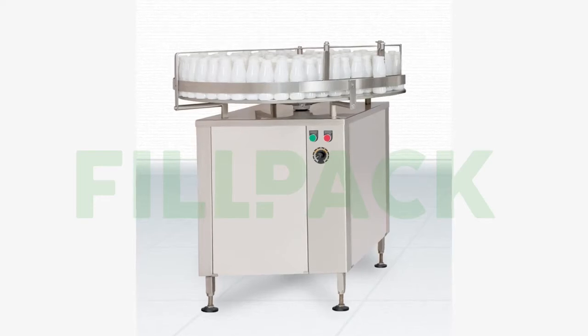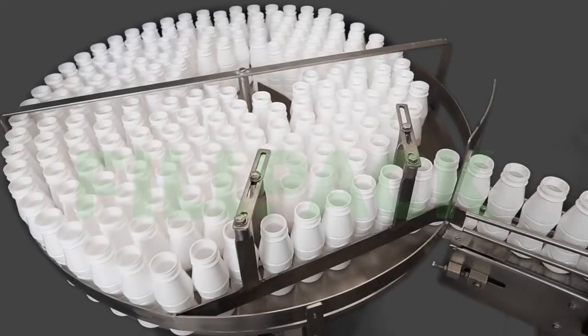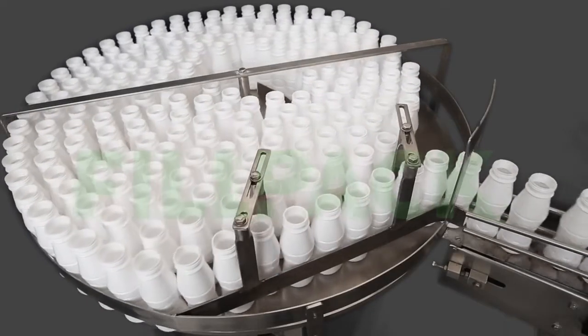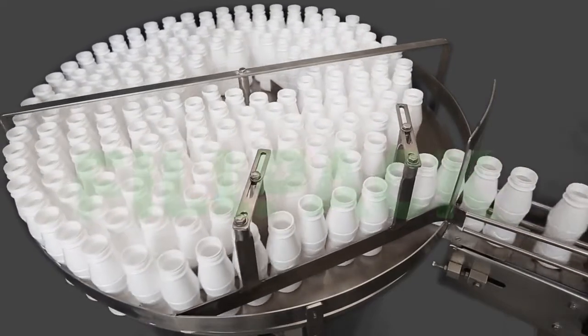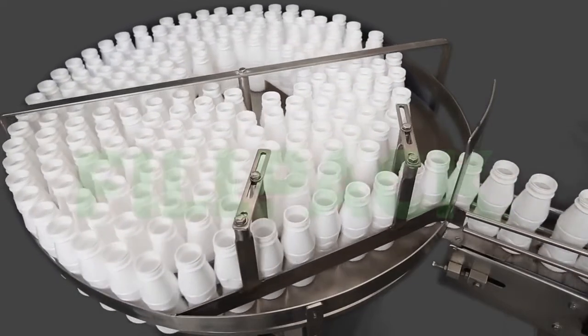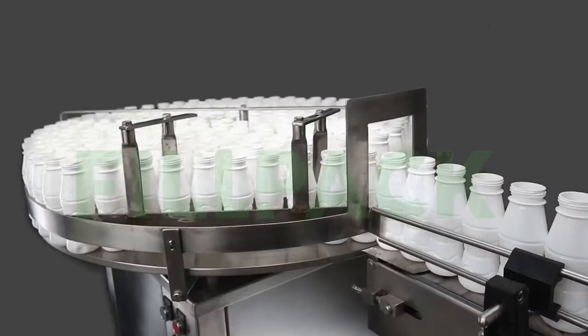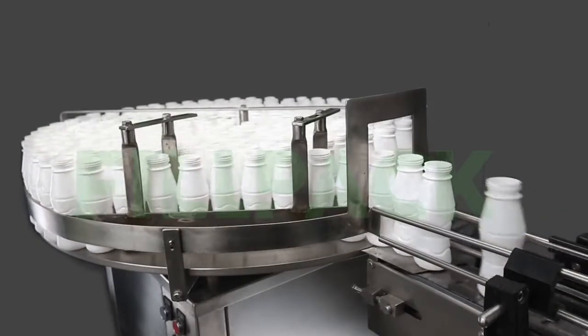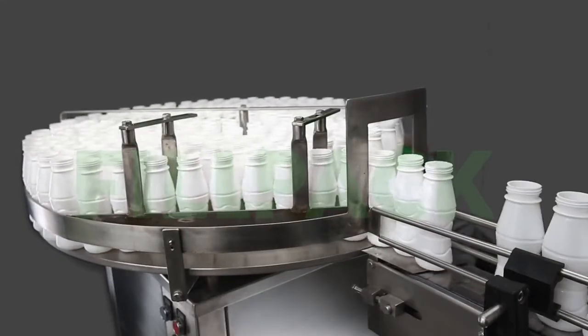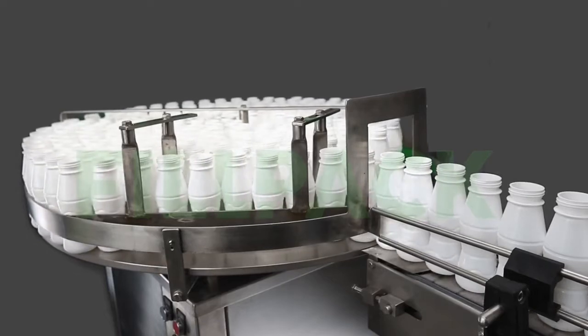Turntable: Bottles are loaded on the turntable to cover all areas of the table. The table is continuously rotating and feeding the bottles on a conveyor line. Constant loading of bottles is required on the turntable to maintain the speed.